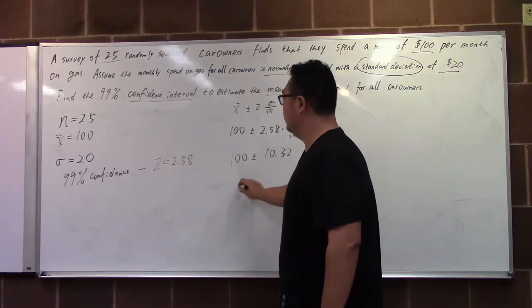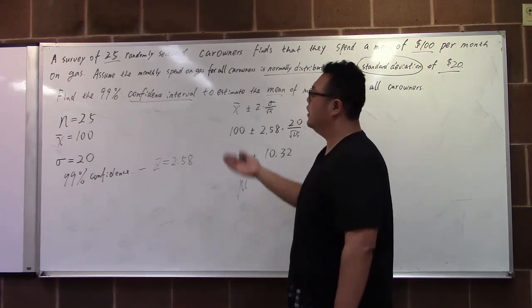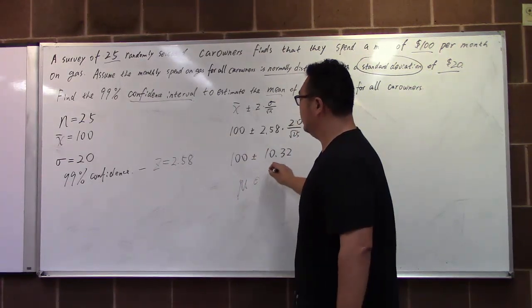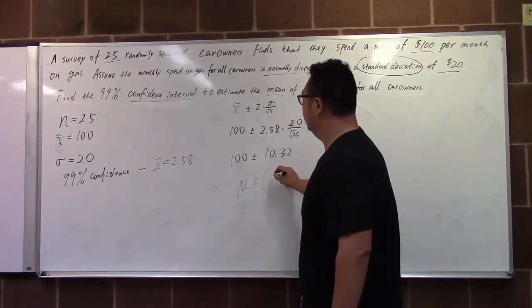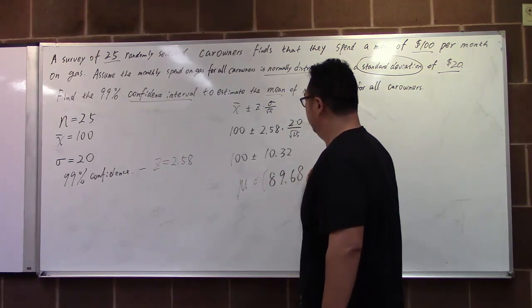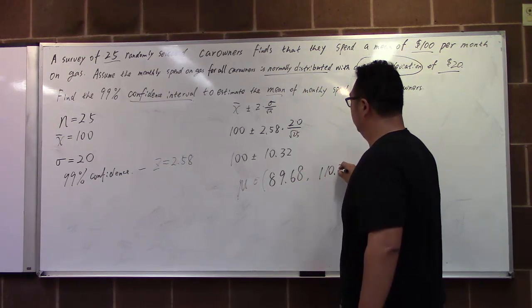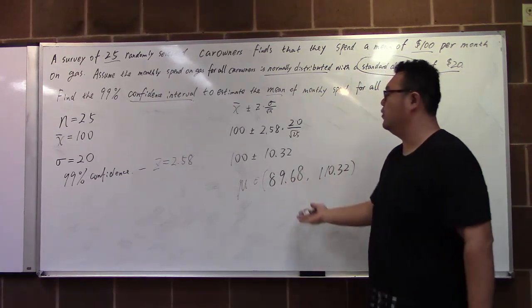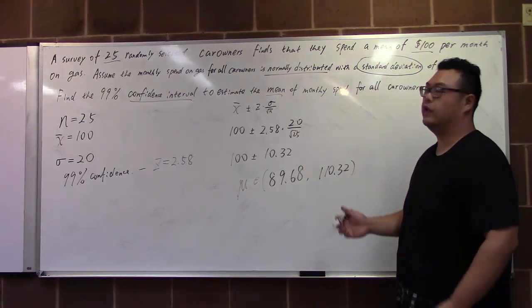Therefore the mean, the population mean, we are 99% confident that it falls in the region between 89.68 to 110.32.